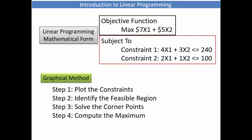Finally, we now state the problem in mathematical form. Maximize 7x1 plus 5x2 subject to constraints 1 and constraint 2. Constraint 1 is the electronic assembly, and constraint 2 is the mechanical assembly.